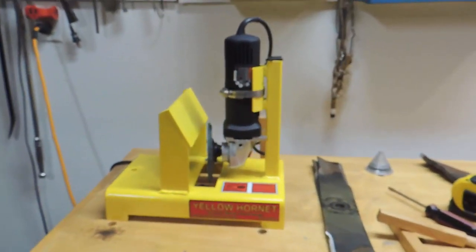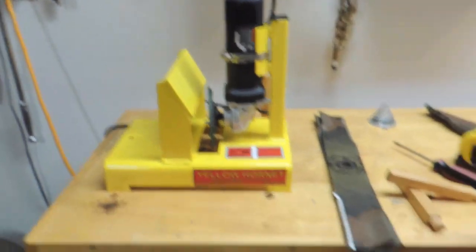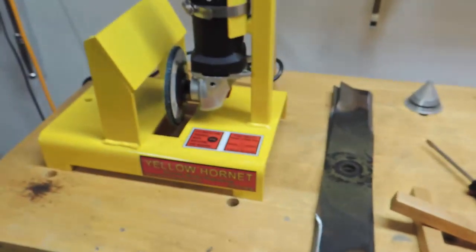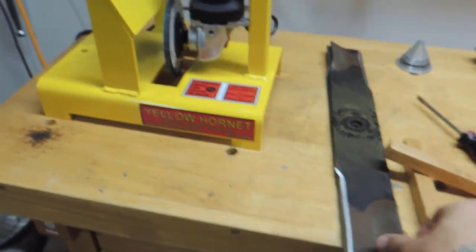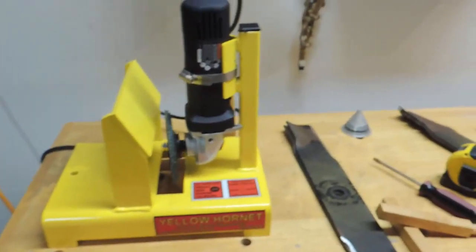Alright guys, there's a quick look at the Yellow Hornet all set up and ready to rock and roll. These are some blades, or at least a blade that I had done previously. Let's look at the things that come in the box.